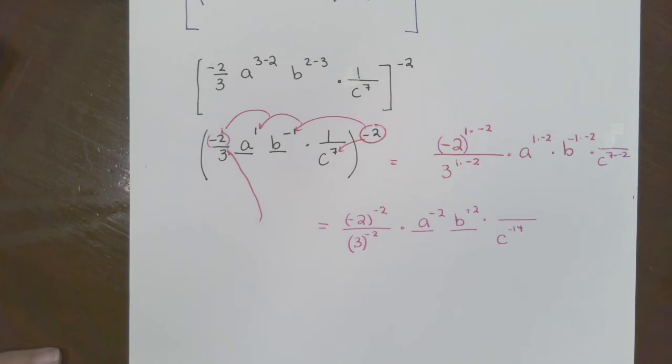You can put three in parentheses as well. Times a to the negative two power, b to the positive two power, and we got c in the denominator as c seven times two is negative fourteen. Again, right now a is in the numerator, b is in the numerator, c is in the denominator. If you don't have a calculator, go get a calculator please.